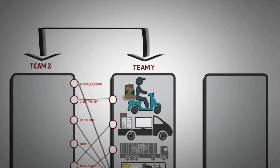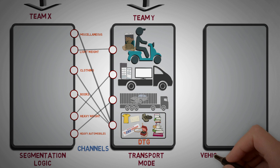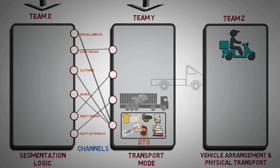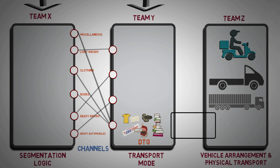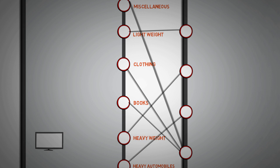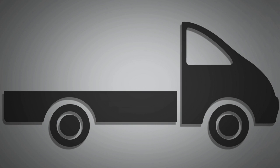So team X and team Y take the decisions, but the vehicle arrangement and the physical transportation is executed by team Z. Here, team Z is working at the front end and is actually transferring the items. Now, let's say a TV needs to be delivered. So team X and team Y have categorized it as heavy weight, which needs to be transported in truck.